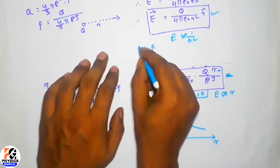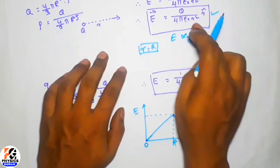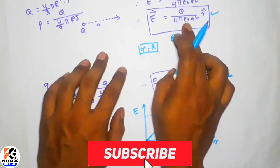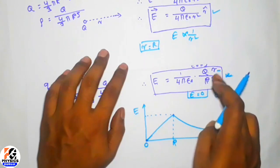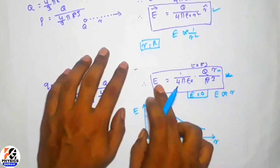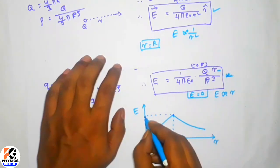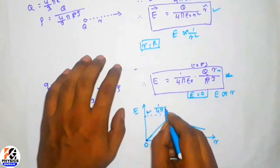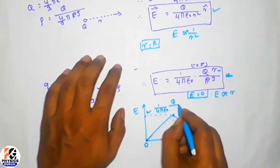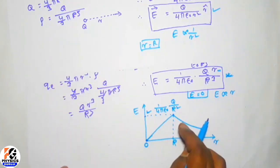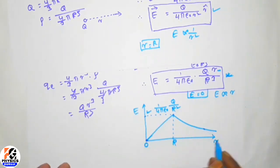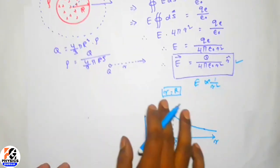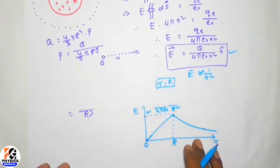The maximum value of the electric field occurs at the surface of the sphere. That maximum value can be obtained from both equations at the boundary where r equals R, giving E max equals 1 over 4π epsilon-zero times Q over R². So the electric field increases inside the sphere and decreases outside the sphere as you move away from the center.